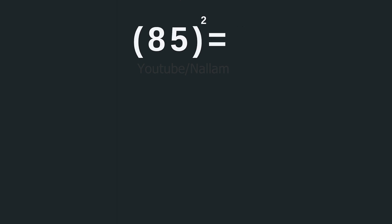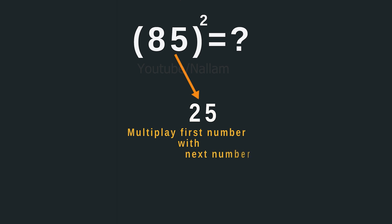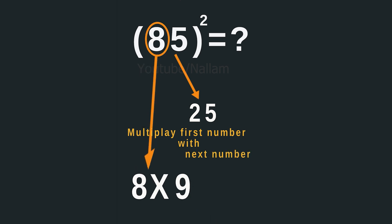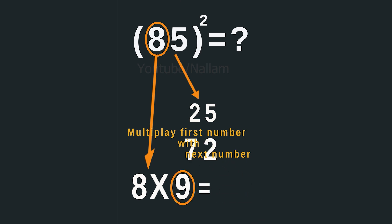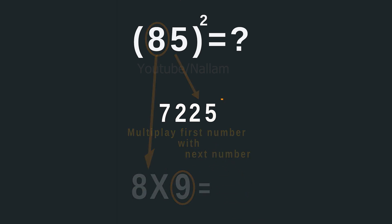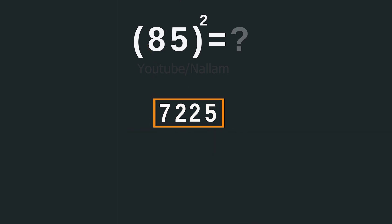Now 85. Square the last digit, which gives you 25. Then multiply 8 with its next digit, that is 9. Evaluate 8 times 9, which gives you 72. Piece the results together to get the square of 85, which is 7225.